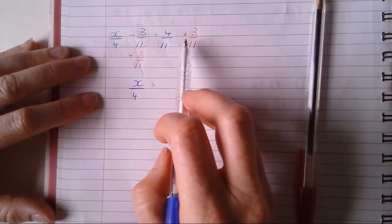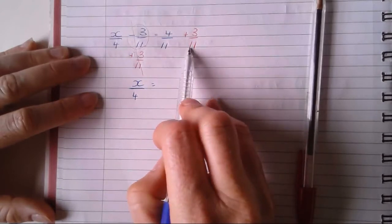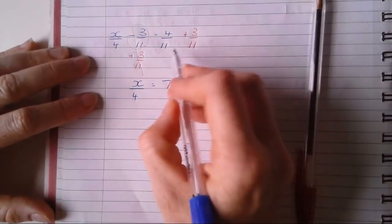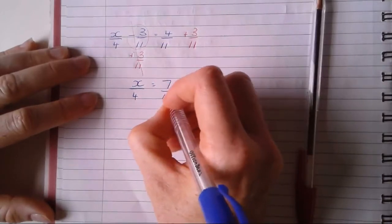And now, on this side, I know I can add them because my denominators are the same. So I'm just adding the top, though, remember. So four plus three, seven. My denominator stays the same over eleven.